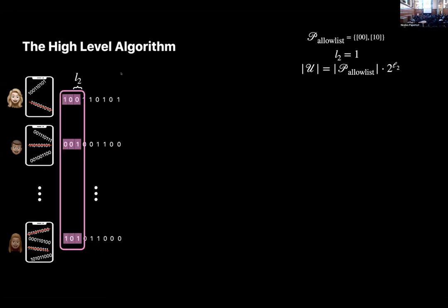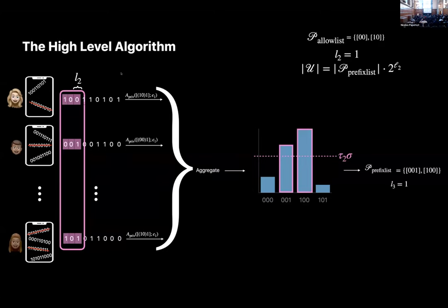The server chooses a segment length for the next round, then sends the heavy hitter prefixes from the previous prefix length and the new segment length to the users. Users then eliminate any data point whose prefix is not a heavy hitter in this list, and from the remaining things they choose one, extending their prefixes to include the new segment length bits. The data universe is now not two to the L1 plus L2, but just the prefix list times two to the new segment length. If we didn't get a ton of heavy hitters — which often happens in this sparse or long-tail range — the heavy hitter list will be much smaller than two to the segment length. This process repeats until they've sent their entire data point, and users pick a new data point at every round.